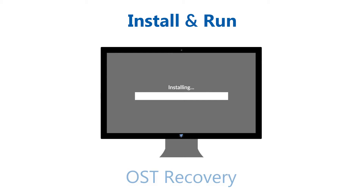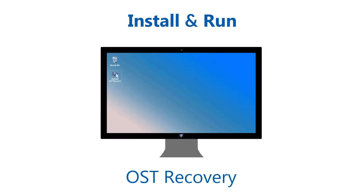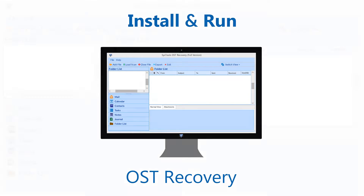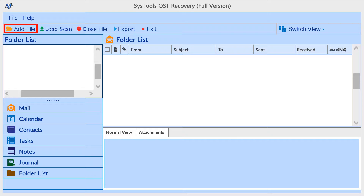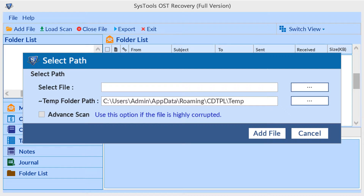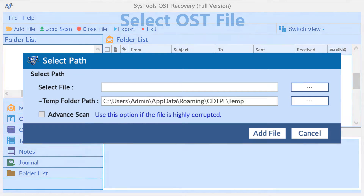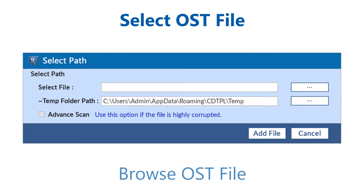First, install and run the SysTools OST Recovery tool on your system. Click the Add File option to open the browsing window for selecting your OST file and temp folder. Browse your OST file and change the temp folder path if needed. If your OST file is corrupted, select the advanced scan mode, then click the Add File button to continue.